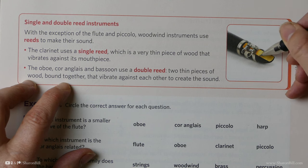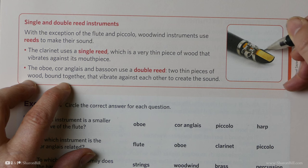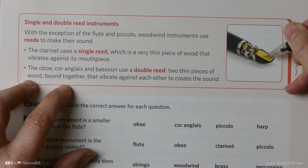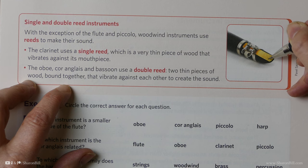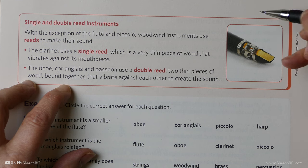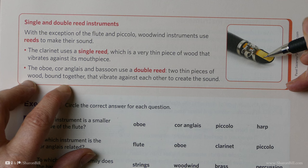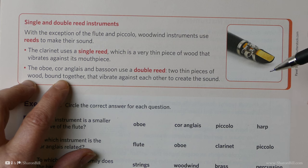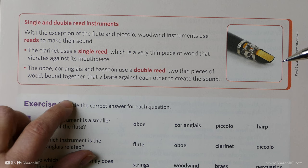Some have a single reed, like the clarinet shown here, just one reed braced against the instrument. Others have a double reed, where they have two thin pieces of wood that you blow down and they vibrate against each other to create the sound. The clarinet is a single reed, and the double reed instruments are the oboe, the cor anglais, which are the same family, and the bassoon as well, which is the bass instrument.